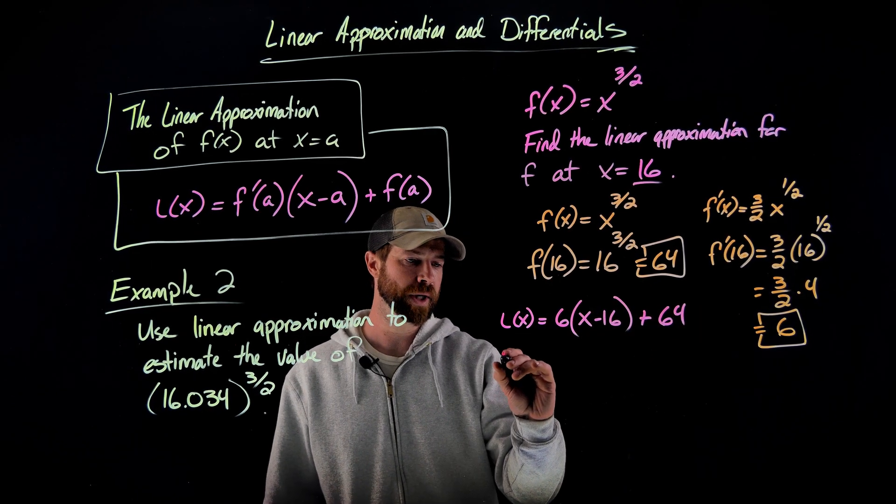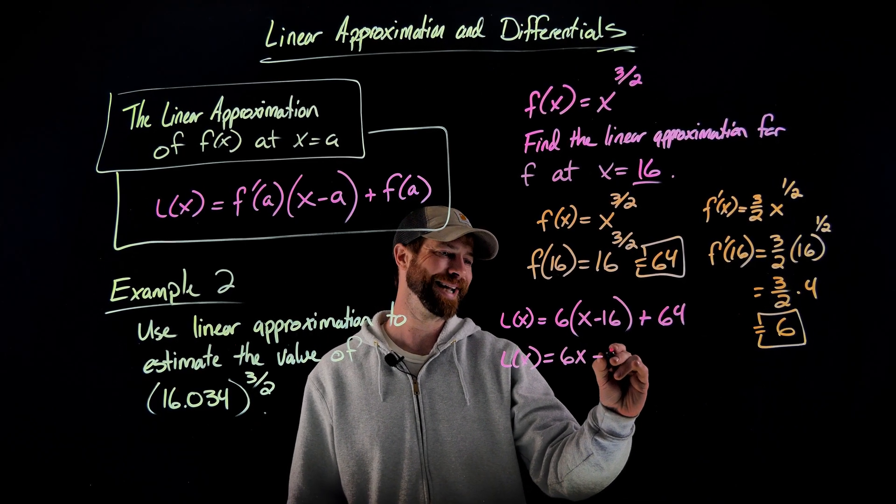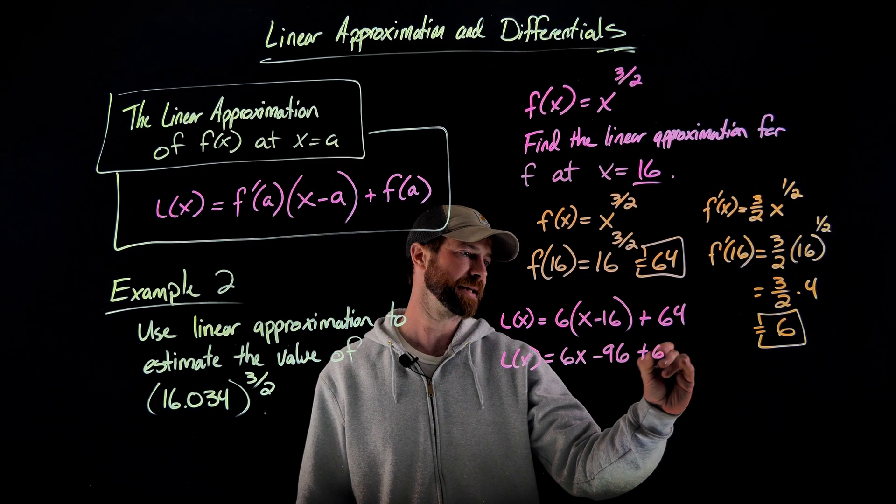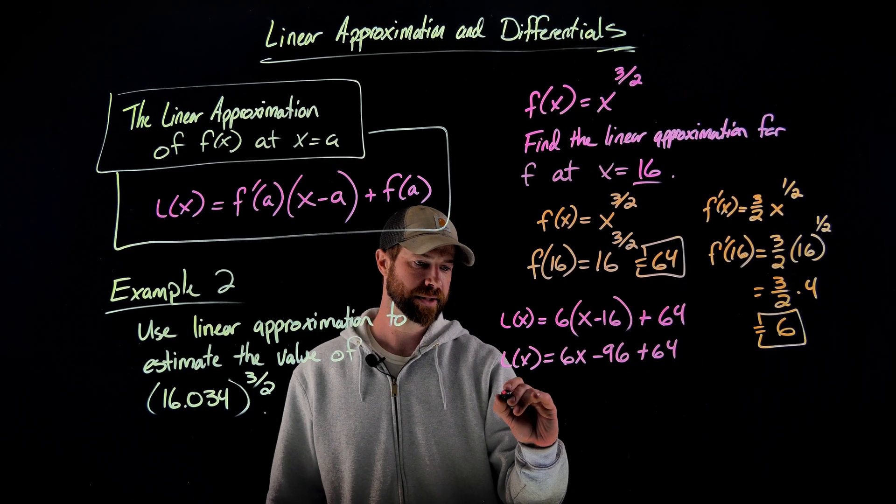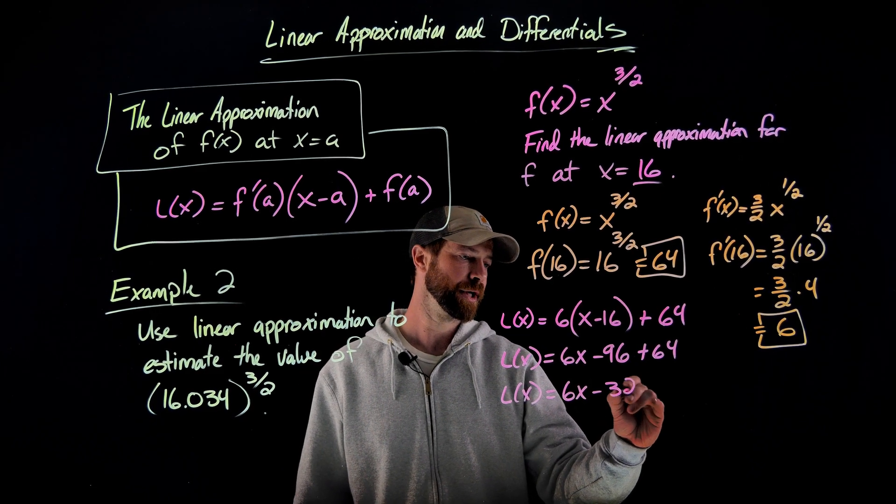We'll just clean up this linear approximation real fast, distribute this six to get 6x minus 96 plus 64, combine these terms to get the linear approximation equals 6x minus 32.